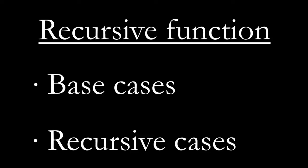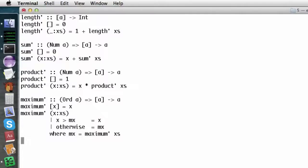There are many simple, useful functions to be written for lists. For good or ill, most of these are already built into Haskell. We can redefine them ourselves by using slightly different names with apostrophes. Let's look at several examples taken from chapters 4 and 5 in the book.